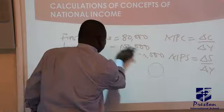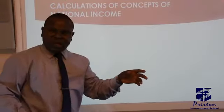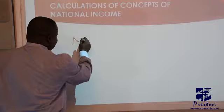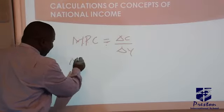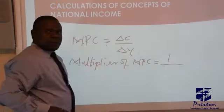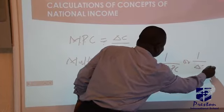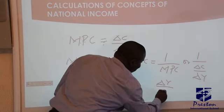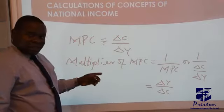Now the last part is the multiplier. The multiplier is talking about the ratio — that is, the reciprocal of any number given to you. MPC has the formula of change in C over change in Y. But when you talk about the multiplier of MPC, that is 1 over MPC, which is also 1 over (change in C over change in Y). We can transform this to be change in Y over change in C, because the reciprocal flips the fraction.